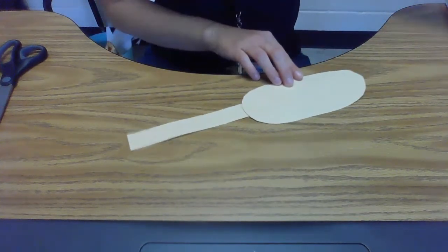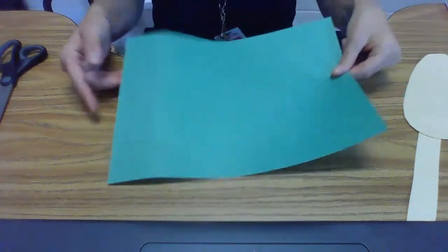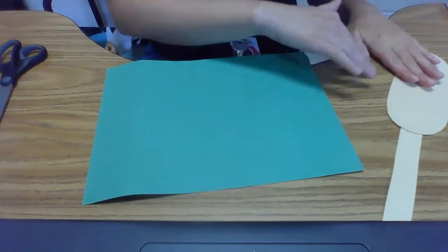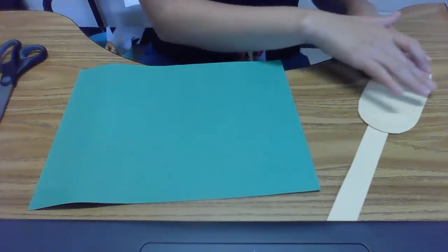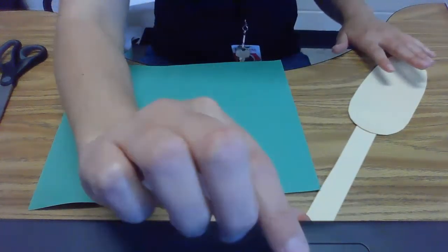Then grab your green paper and cut out two leaves, two green leaves. That's going to be the husks, the green husks of the corn.